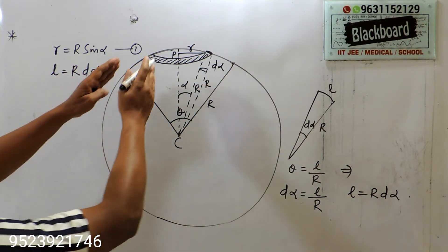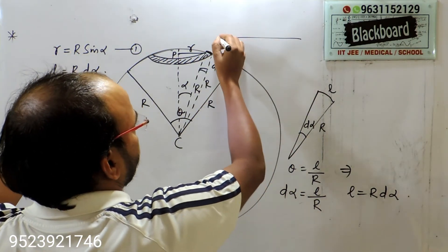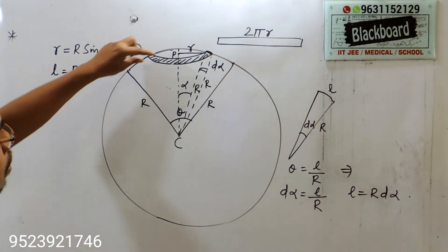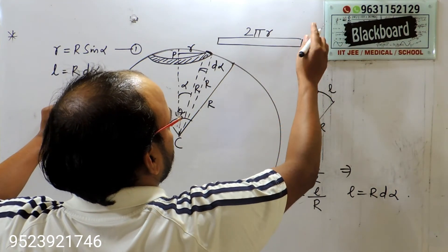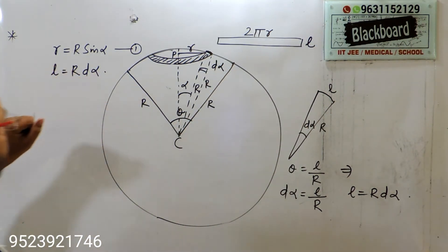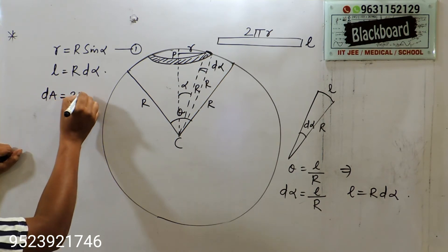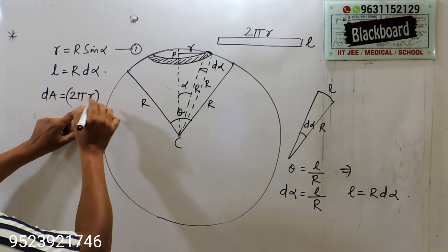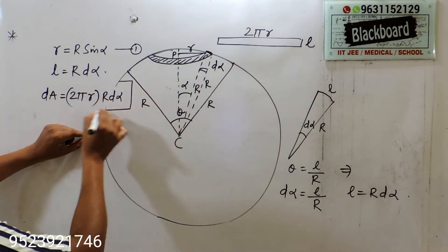To find the area of this ring, if we cut and expand the ring we get a rectangular strip. The length of this strip is 2πr (the circumference), and the width (thickness) is L, which is R d(alpha). So the area element dA = 2πr × L = 2πr × R d(alpha).